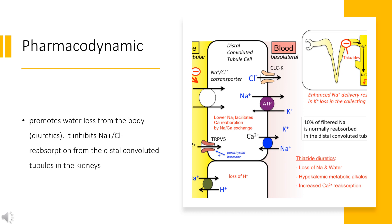Chlorothiazide affects the distal renal tubular mechanism of electrolyte reabsorption. At maximal therapeutic dosages, all thiazides are approximately equal in their diuretic effect. Chlorothiazide increases excretion of sodium and chloride in approximately equivalent amounts.